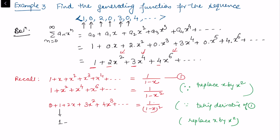After replacing x by x²: the 1 remains 1, x becomes 2x², x² becomes 3x⁴, x³ becomes 4x⁶ (since x³ with substitution x → x² gives (x²)³ = x⁶, and the coefficient is 4).